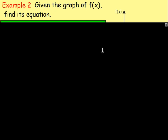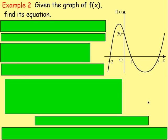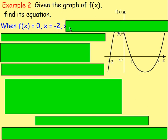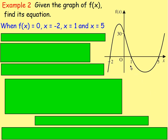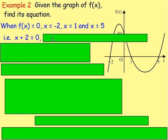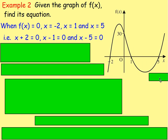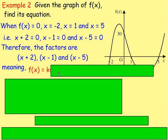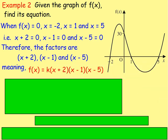Let's move on to example number 2. Given the graph of f of x, find its equation. This time, the graph is crossing the x-axis at negative 2, 1, and 5. So f of x equals 0 — the value of y is 0 when x is negative 2, x is 1, and x is 5. To get the factors, rearrange: x plus 2 equals 0, x minus 1 equals 0, and x minus 5 equals 0. Therefore the factors are x plus 2, x minus 1, and x minus 5.